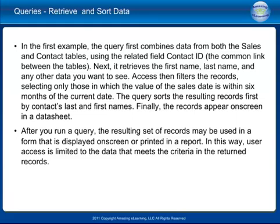In a query example, the query first combines data from both the sales and contact tables using the related field Contact ID — the common link between the tables. Next, it retrieves the first name, last name, and any other desired data. Access then filters records selecting only those where the sales date is within six months of the current date. The query sorts results by the contact's last and first names. The records appear on screen in a datasheet, and the resulting set may be used in a form or printed in a report, limiting user access to only the data meeting the criteria.